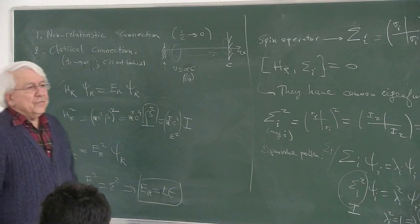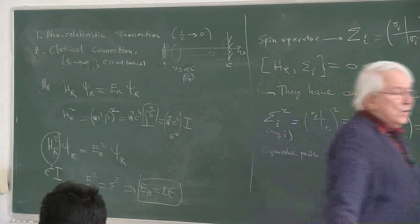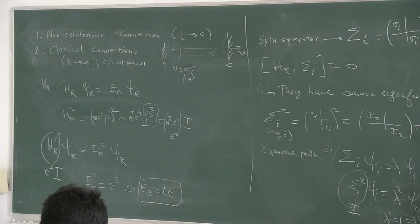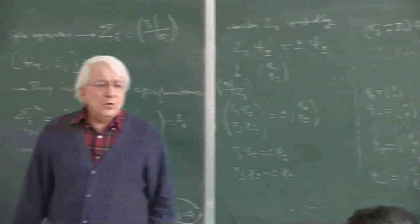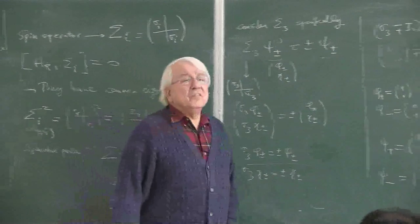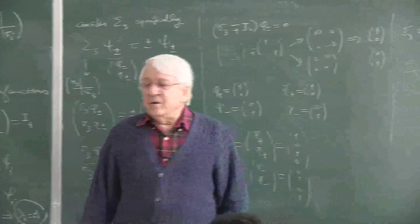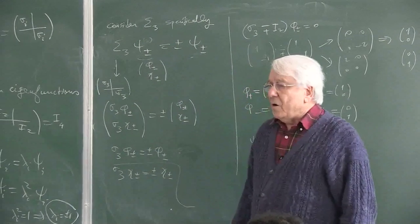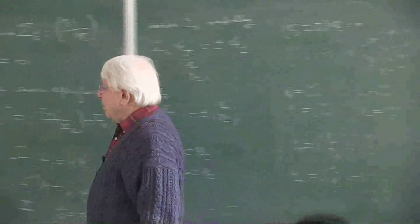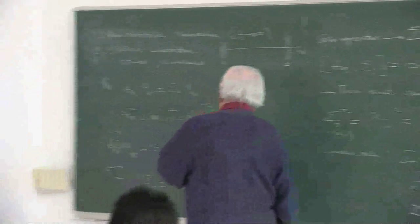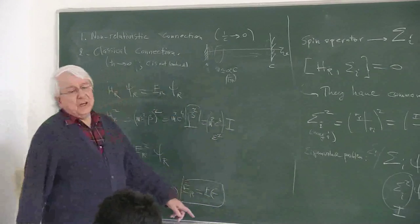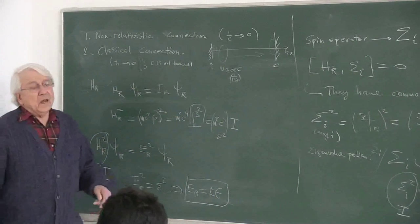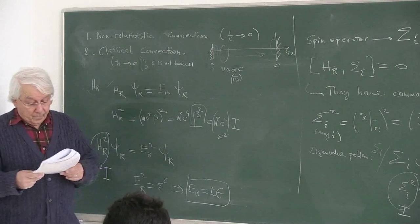So I have now these two sets of eigenfunctions in hand. One set is the eigenspinors of the sigma_3 operator; the other are the eigenfunctions of H_R. H_R is associated with the eigenvalues ±mc². Perhaps I can work out the form of those.